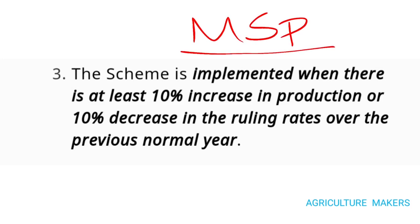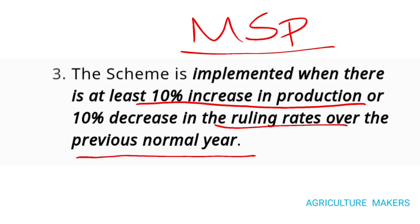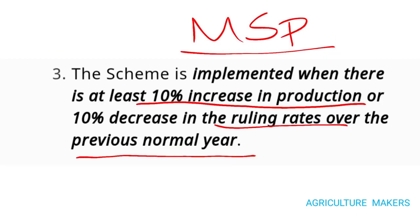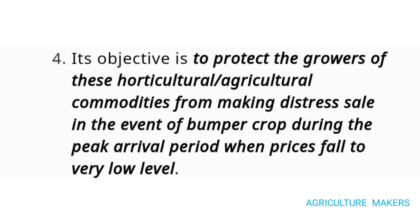There is a criteria to implement this scheme: if there is a 10% increase in production or a 10% decrease in the ruling rate over the previous normal year, then the market intervention scheme will be implemented on the request of the state government. It is implemented only in the particular state which has requested it, and not in all other states.